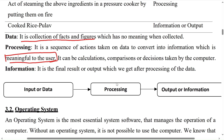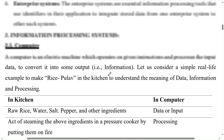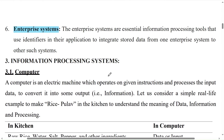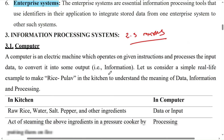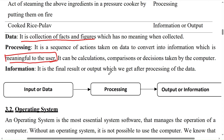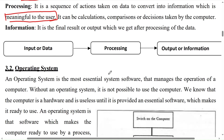When data is provided to the computer, the computer will process it and give you a proper, meaningful output. This is how data is processed in a computer — this is the information processing system. This topic can be asked for 2.5 marks, and some MCQs can also come from it.